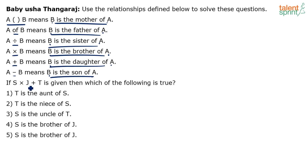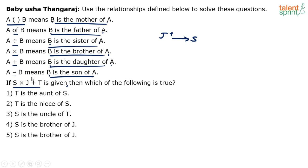Given S into J plus T, let's decode it. 'Into' means brother, so J is the brother of S. 'Plus' means daughter, so T is the daughter of J. It doesn't take any time to draw a family diagram here — J is the brother of S, and T is the daughter of J.